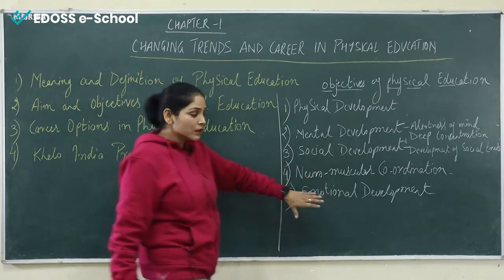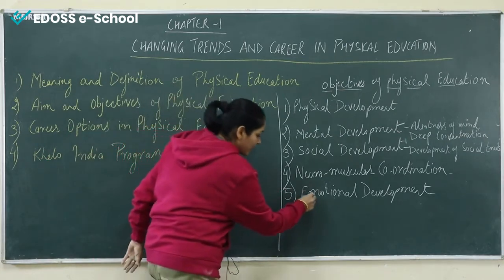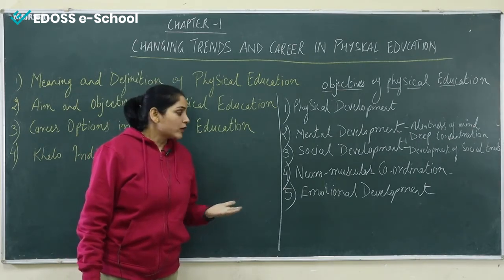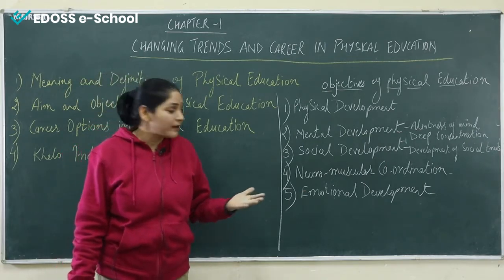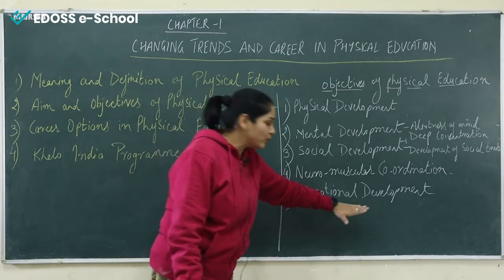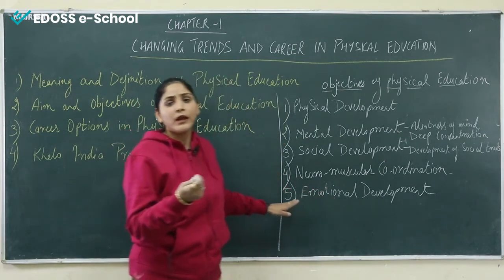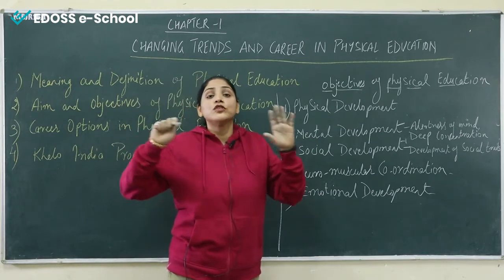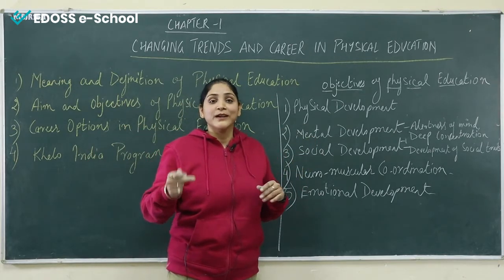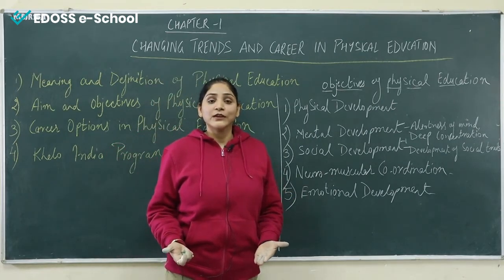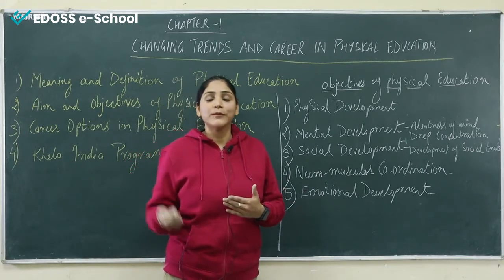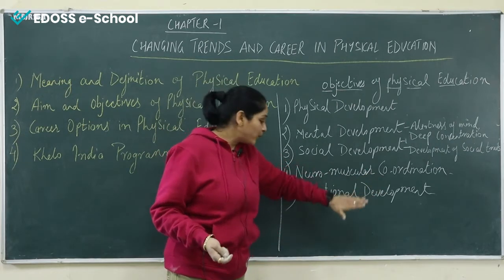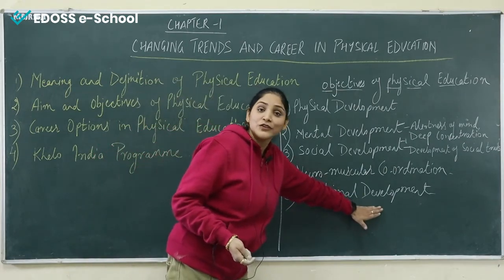After that, emotional development. In physical education, emotional development is very important, because if we play any activity or take part in any tournament, we have to be emotionally strong. We must be emotionally strong whether we are winning or losing any match. We need to control our emotions — if we win, we should not be overly happy, keeping in mind that the other team has lost. And if we lose, we should not go into depression; we must try again for upcoming games. Controlling our emotions is very necessary, and through the programs of physical education, our emotional development will take place.